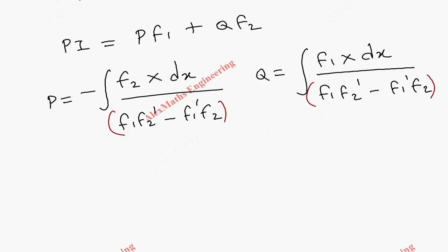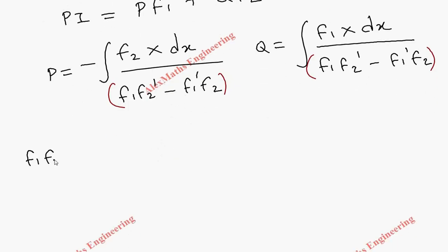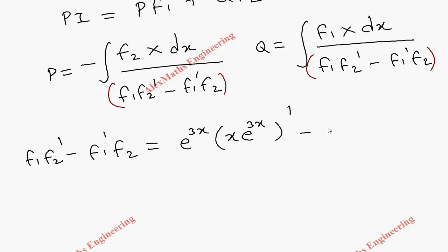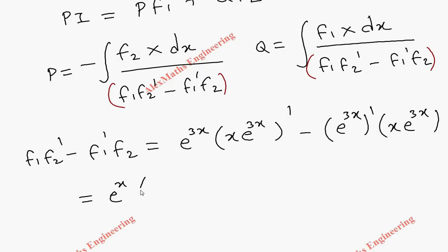Computing the Wronskian: f₁f₂' - f₁'f₂ = e^(3x)·(x·e^(3x))' - (e^(3x))'·x·e^(3x). For the derivative of x·e^(3x), we apply the product rule: x·e^(3x)·3 + e^(3x)·1. The derivative of e^(3x) is 3e^(3x).